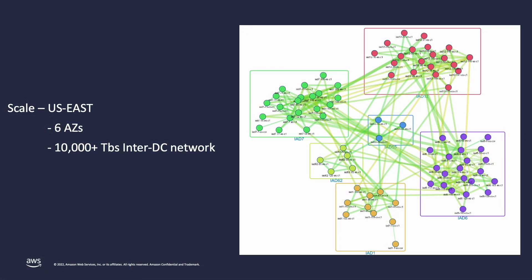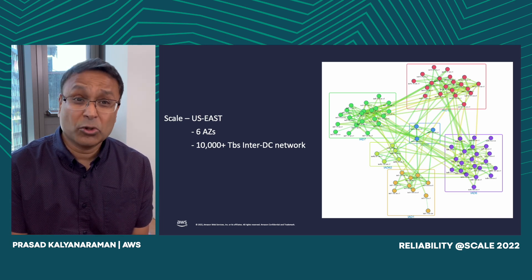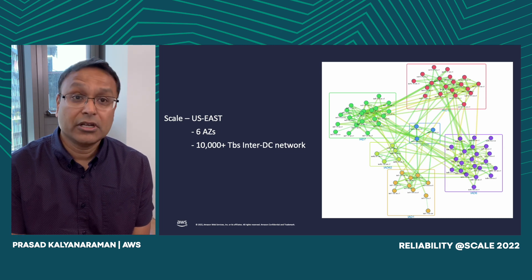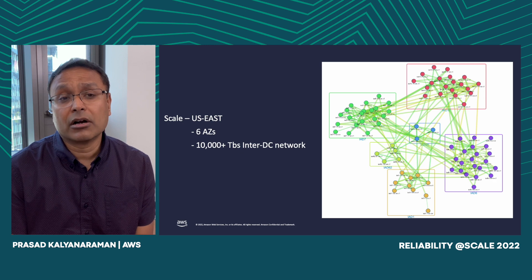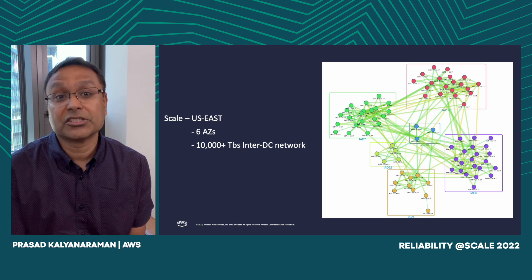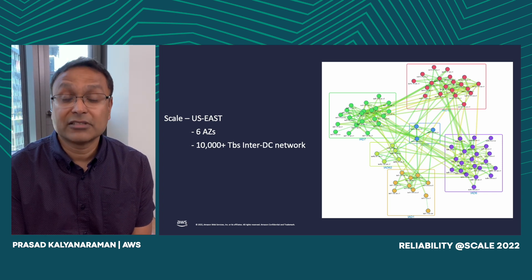To give you an idea about scale at AWS: an AWS region has multiple availability zones, and each availability zone is its own independent fault domain with independent power infrastructure. Our Virginia region has six availability zones, and all our regions have at least three. Each availability zone has multiple data centers — Virginia's have about 20 — so that's 100-plus data centers in Virginia alone. Our inter-DC traffic between these data centers is on the order of 10,000-plus terabits per second.